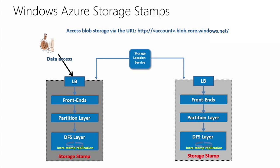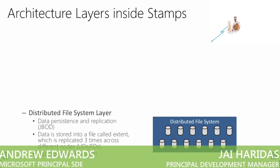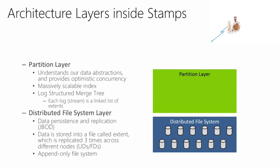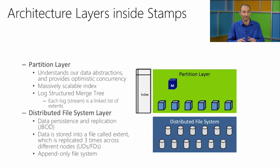The location service pushes data to DNS, helping your application decide where to talk to. Within a storage stamp, the distributed file system at the bottom handles replication between multiple disks and multiple copies of data to ensure your data is redundantly stored. This layer is an append-only file system. The partition layer is the one that understands the abstractions — blobs, tables, queues — and implements a massively scalable index used to scale our service and provide the availability and durability we want.